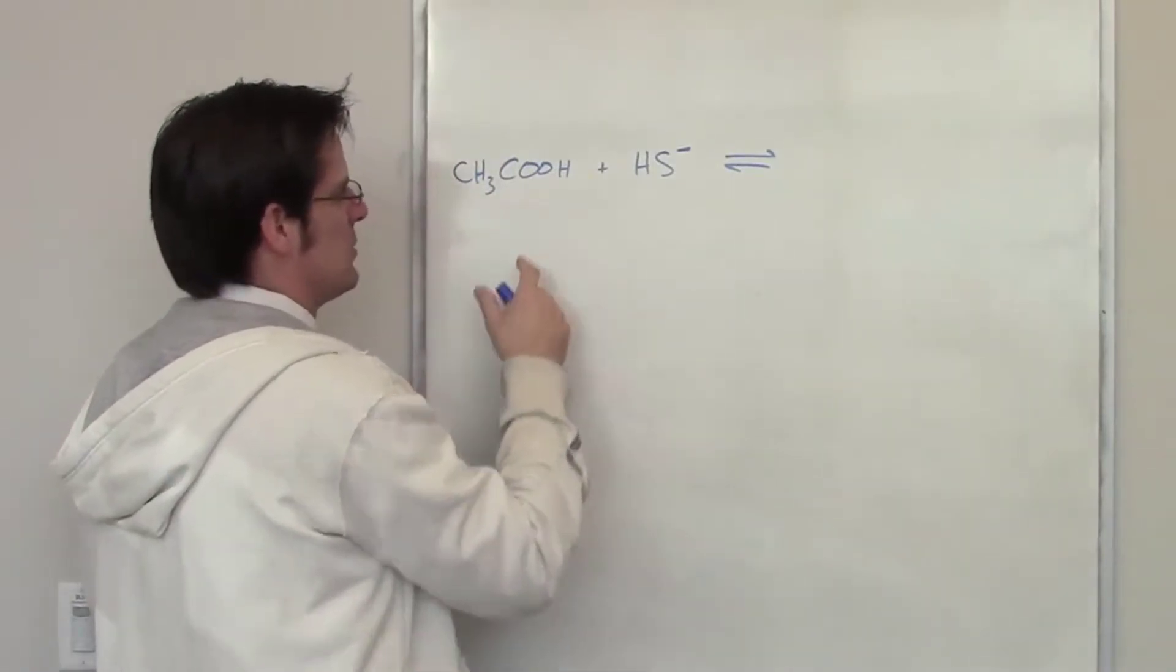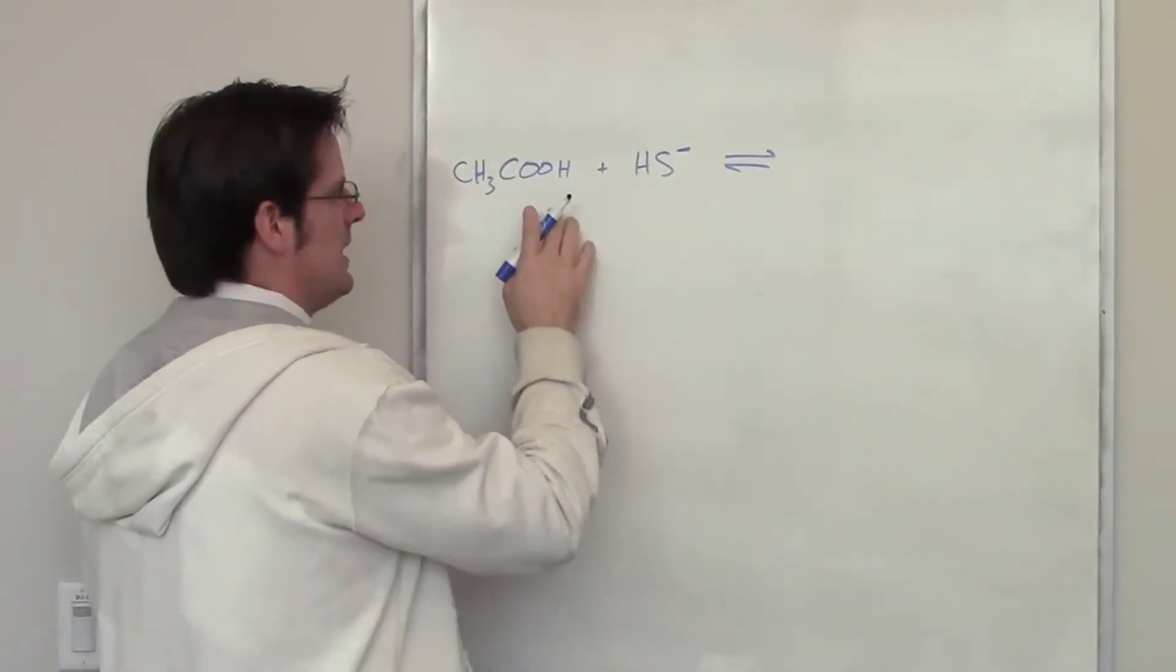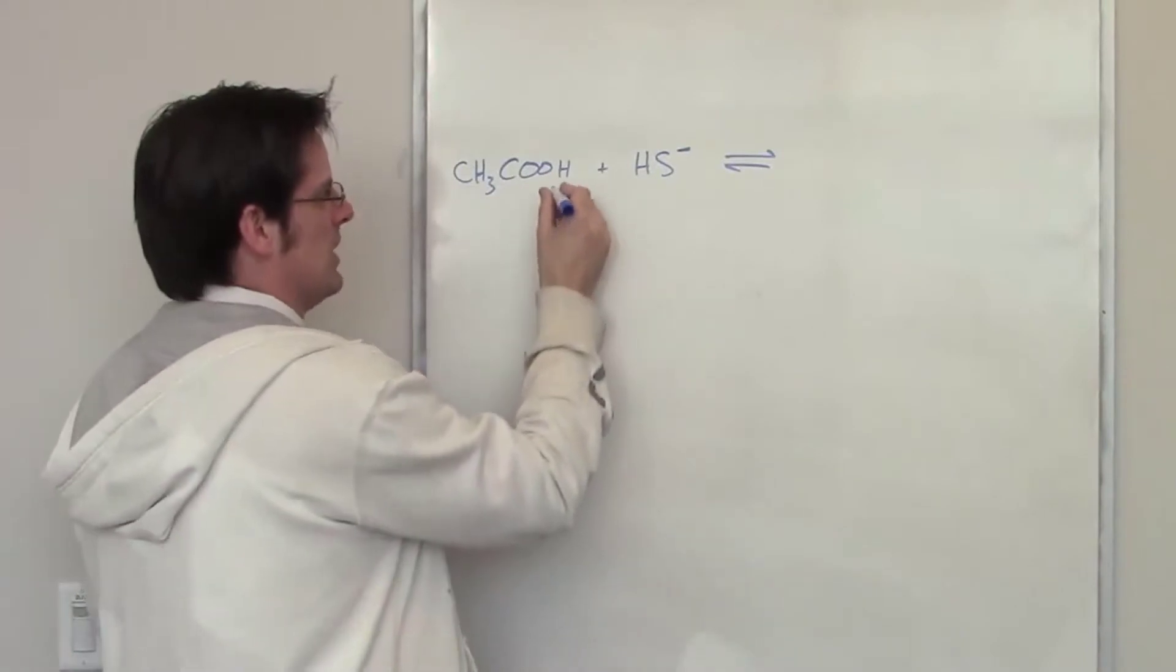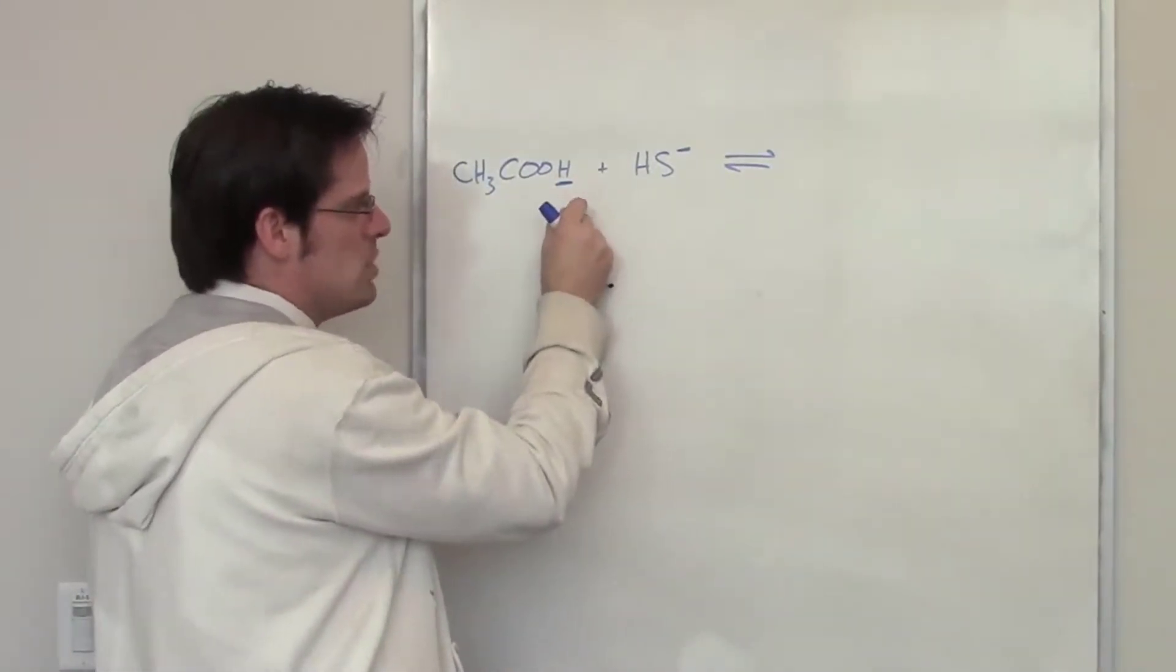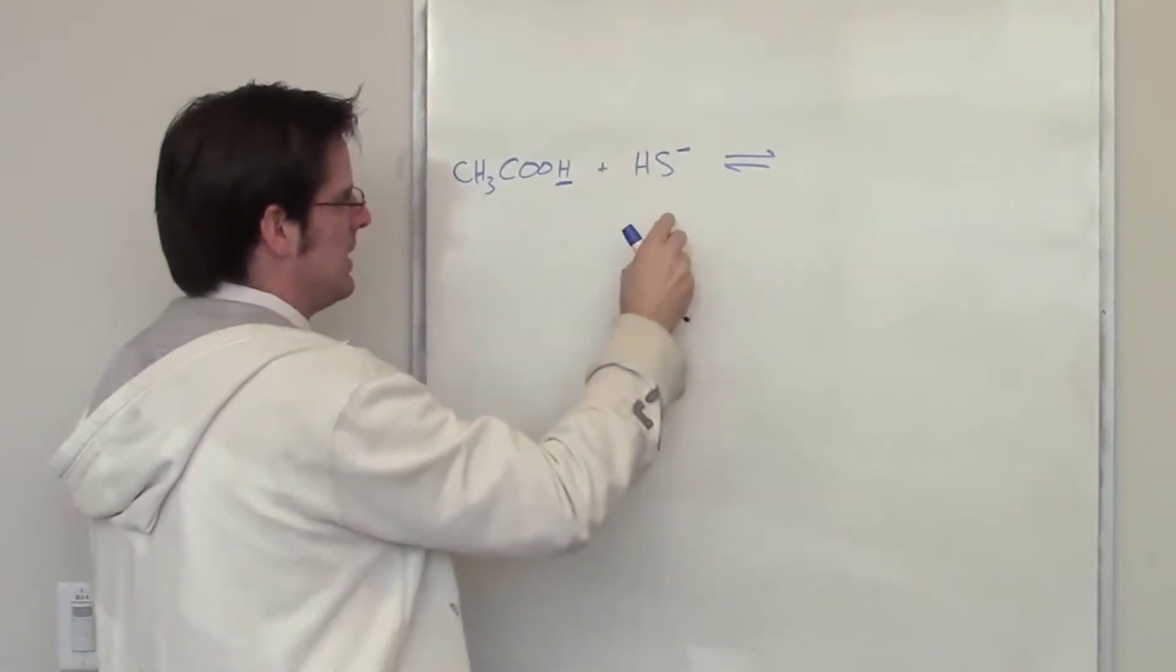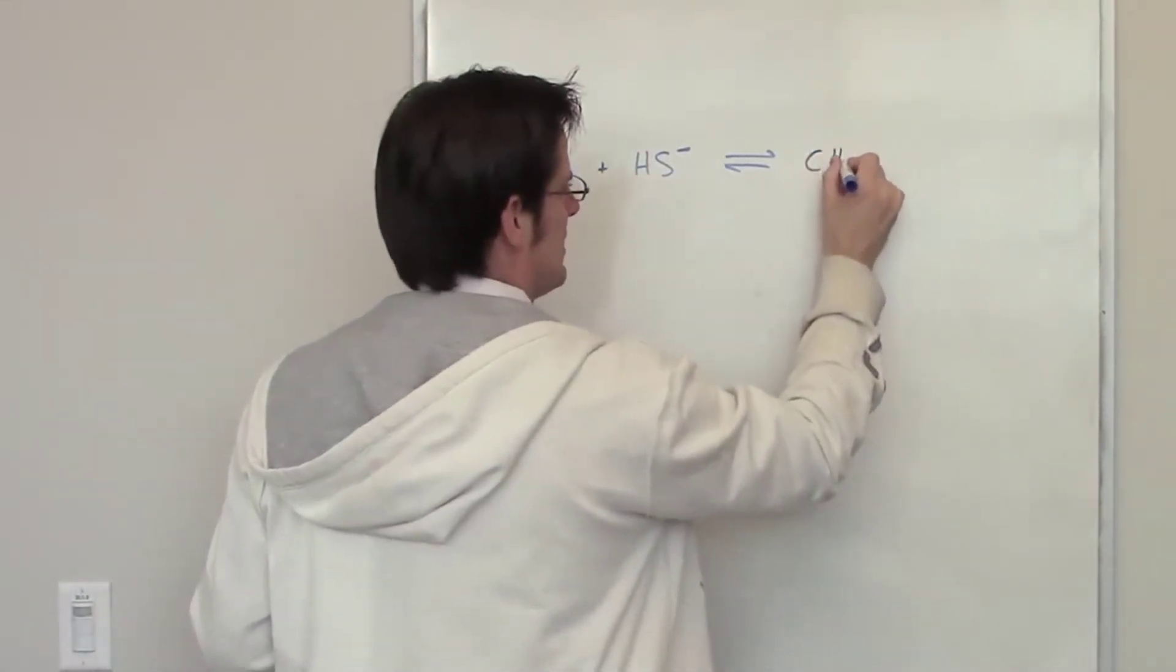This species, however, is called acetic acid, incidentally. It looks a lot more ready to give up a proton, specifically that proton right there. If that hydrogen were removed and donated to this thing, it would form these things to the right.